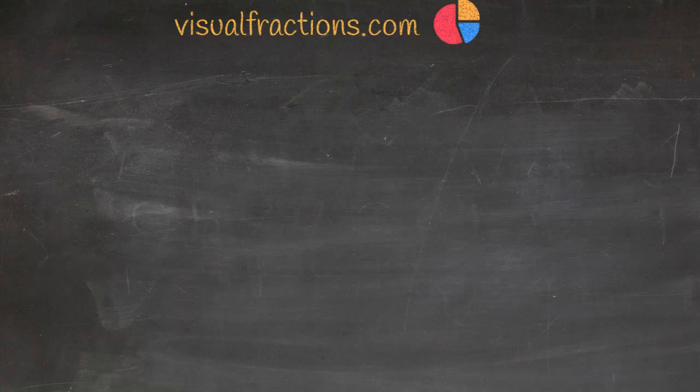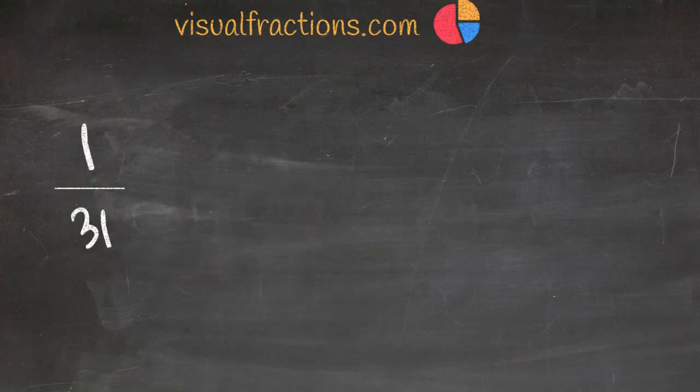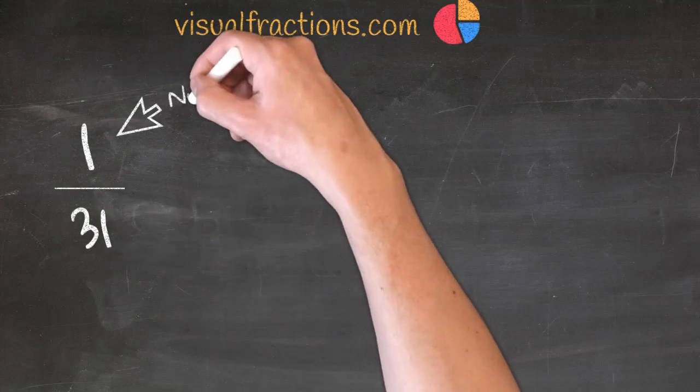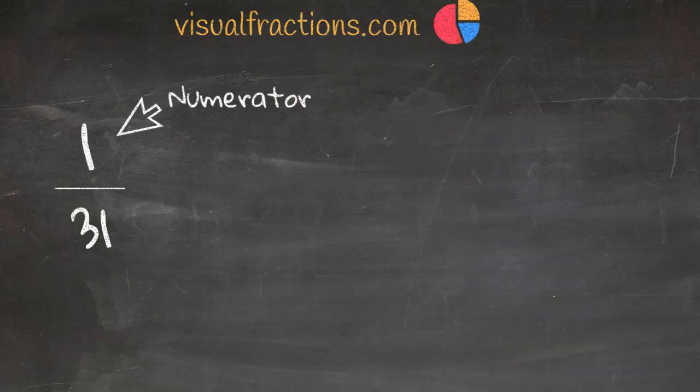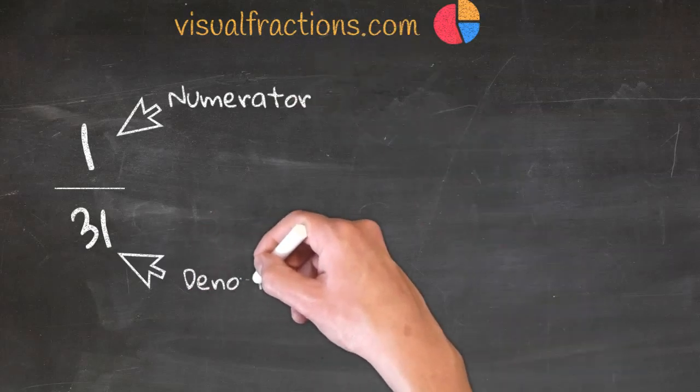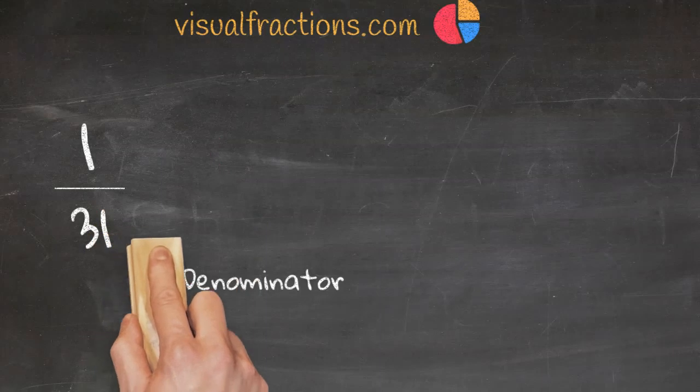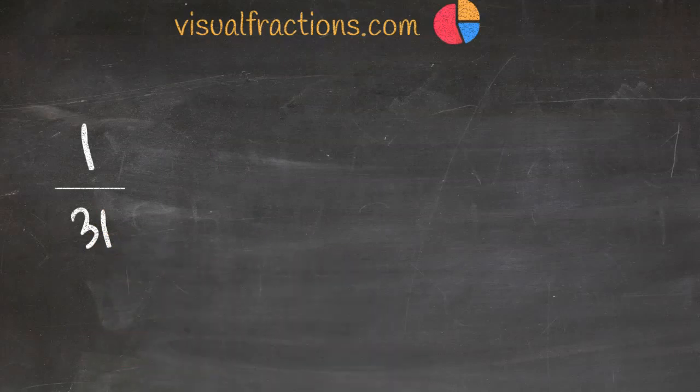First, let's look at our fractions. We have one thirty-first, where 1 is the numerator, meaning the top number of the fraction, and 31 is the denominator, or the bottom number. This fraction represents 1 part out of 31 equal parts.